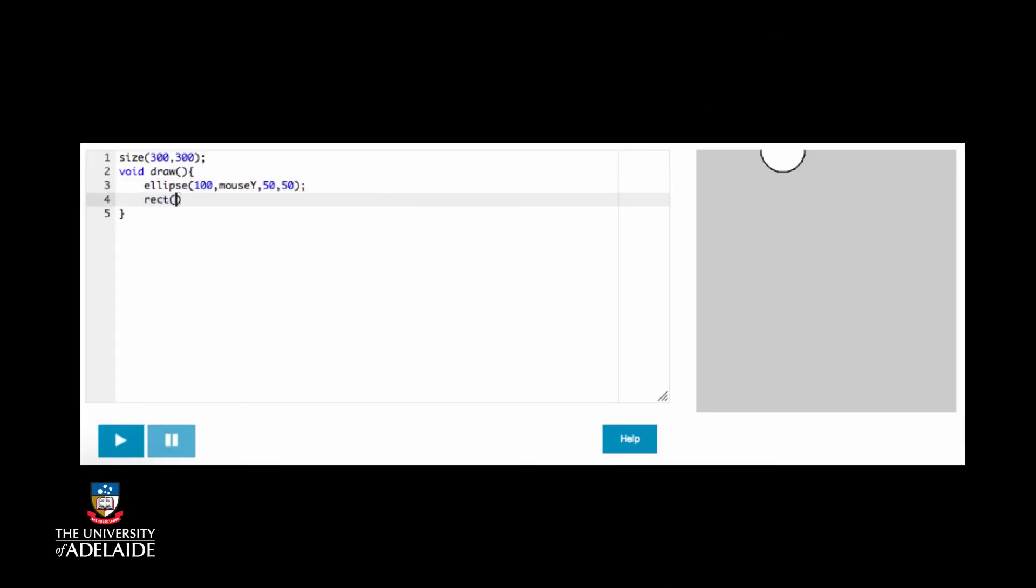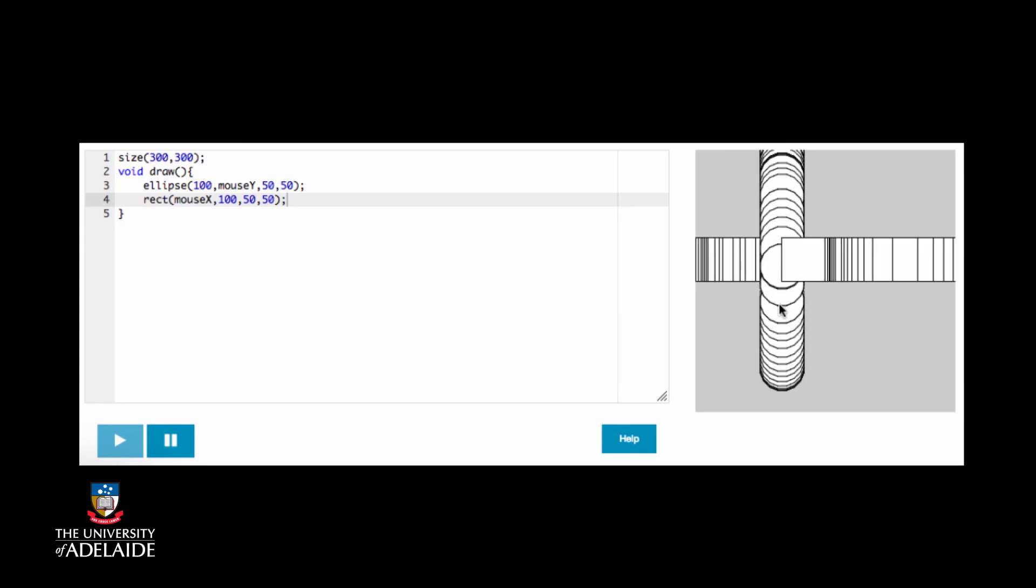The code is very similar, except that we add a rect function to draw the square, using the x mouse coordinate, mouseX, as the coordinate of the top left of the square. Let's try to move the mouse and see what happens.